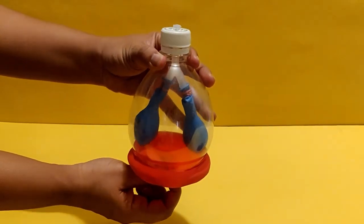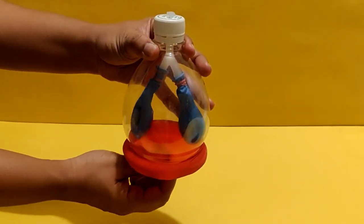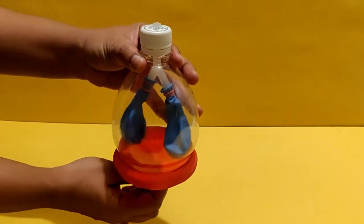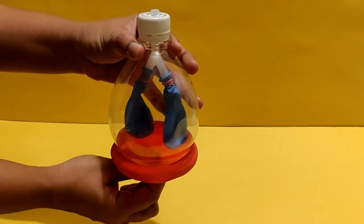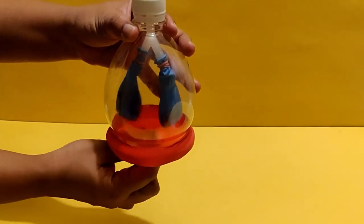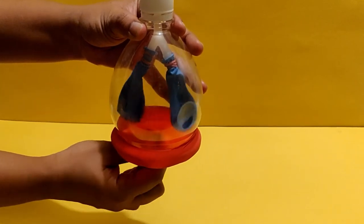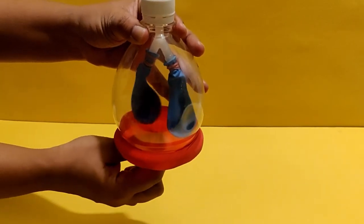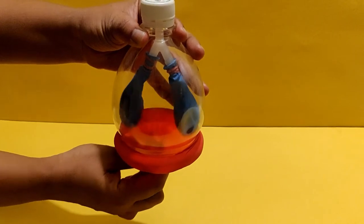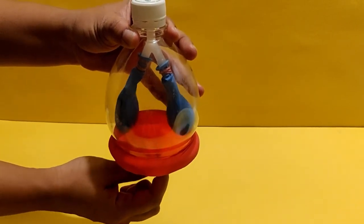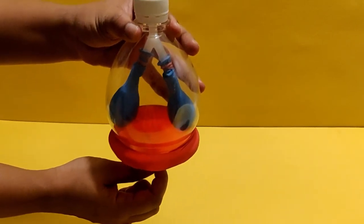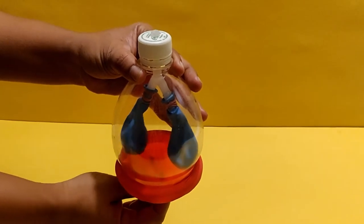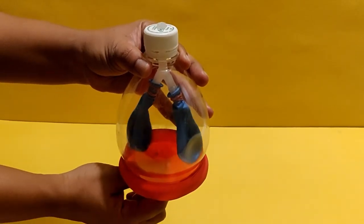Pinch and pull on the taut balloon at the base of the bottle. What do you notice? You will see that the two smaller balloons inflate when the diaphragm at the base is pulled down. If you listen closely, you can hear the air whooshing in and out of the balloon.